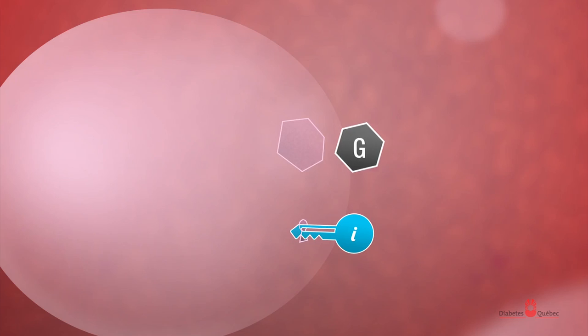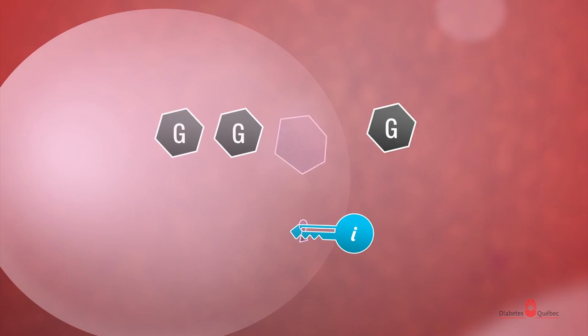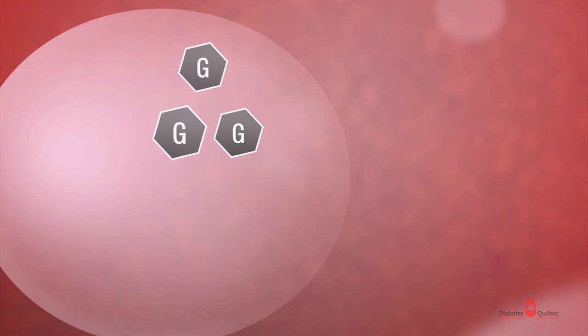The insulin acts like a key, allowing the glucose to enter the cells. The cells, like muscle cells for example, then use glucose for energy.